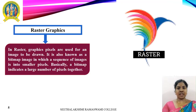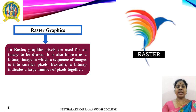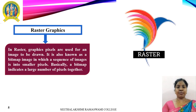Raster graphics consist of a grid of pixels, also known as a bitmap. Most images on the internet and your computer are raster graphics. The file size of a raster graphic depends on several variables. The first is the image resolution — the number of pixels wide by the number of pixels tall. A higher resolution image has more pixels and thus requires more disk space to store. The file size also depends on color depth — how many bits of data each pixel requires. An image with 8 bits of color depth can only display 256 colors, while an image with 24 bits of color depth can display more than 16 million colors.